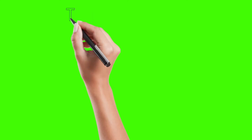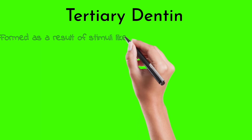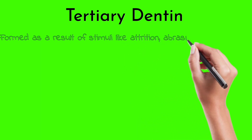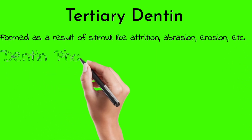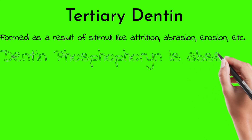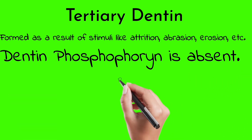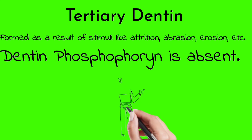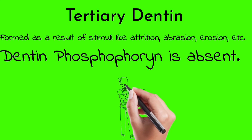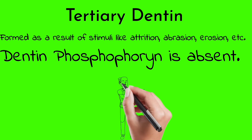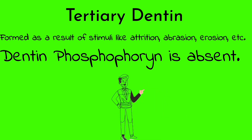Tertiary dentine is also called irregular secondary dentine, reactive dentine, or reparative dentine. It is formed as a result of stimuli like attrition, abrasion, erosion, cavity preparation, or pathologic response. A very important viva question: dentine phosphophorin is absent in tertiary dentine.